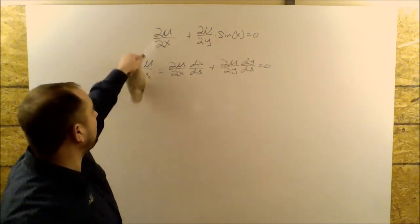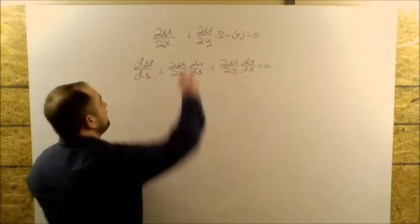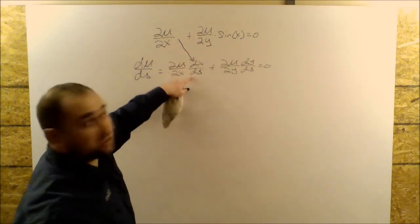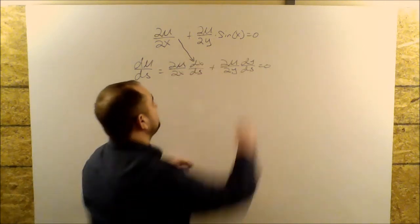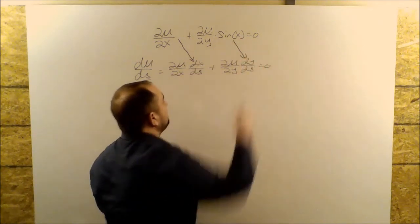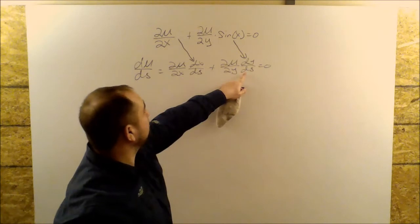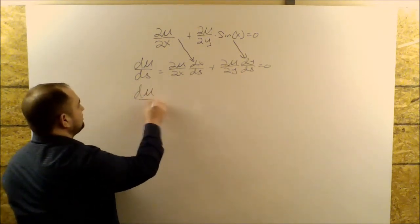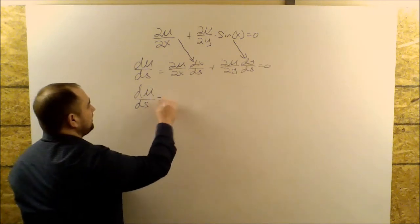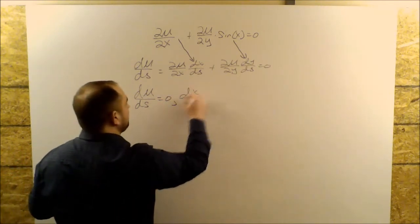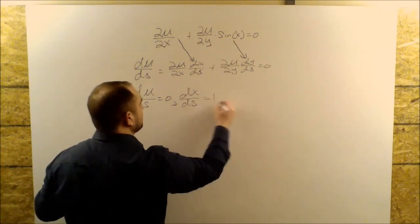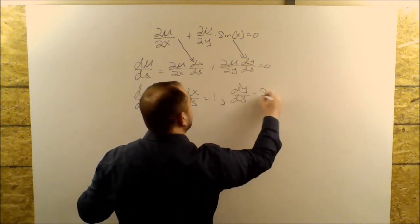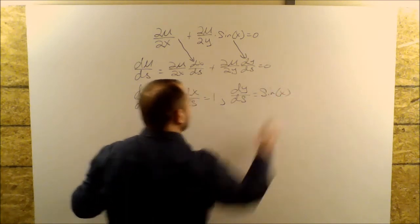Now we want to compare coefficients. So we see that 1 is equal to dX over dS. Likewise, sine of X has to be equal to our dY over dS. So our three equations are dU over dS is equal to 0, dX over dS is equal to 1, and dY over dS is equal to sine of X.